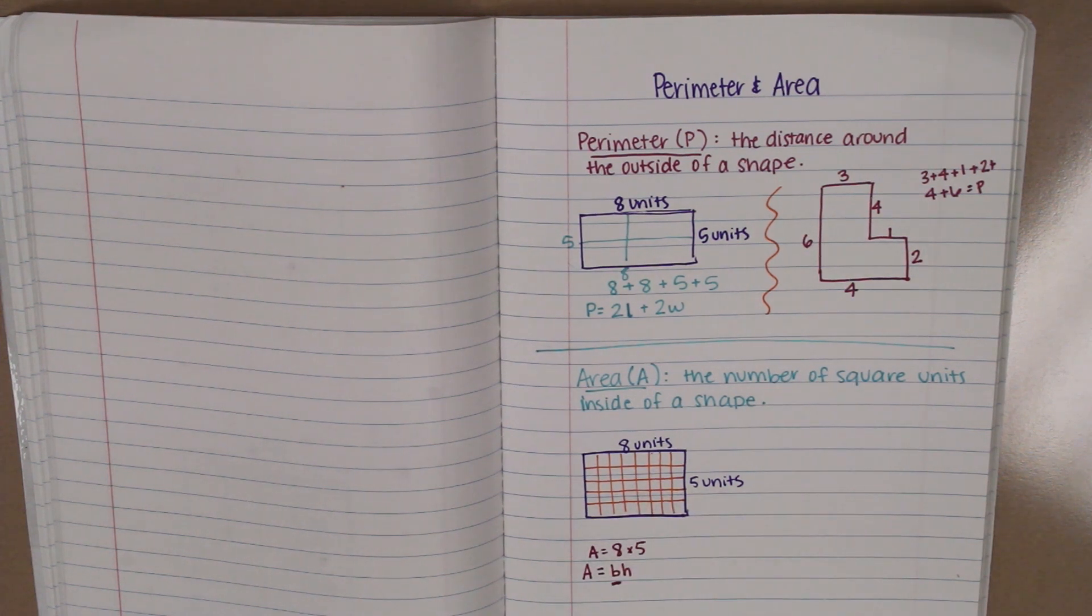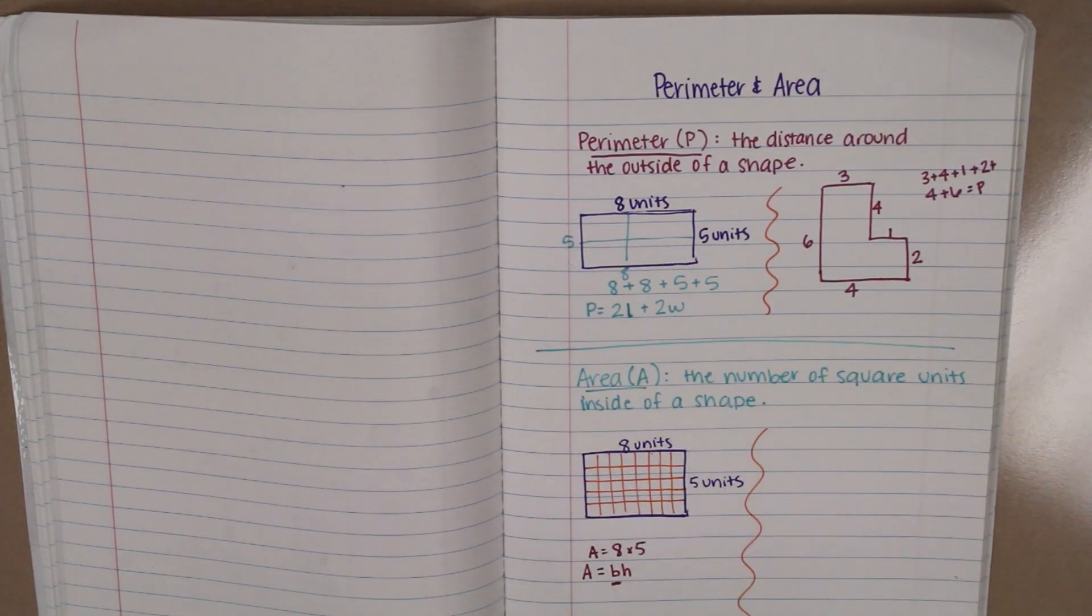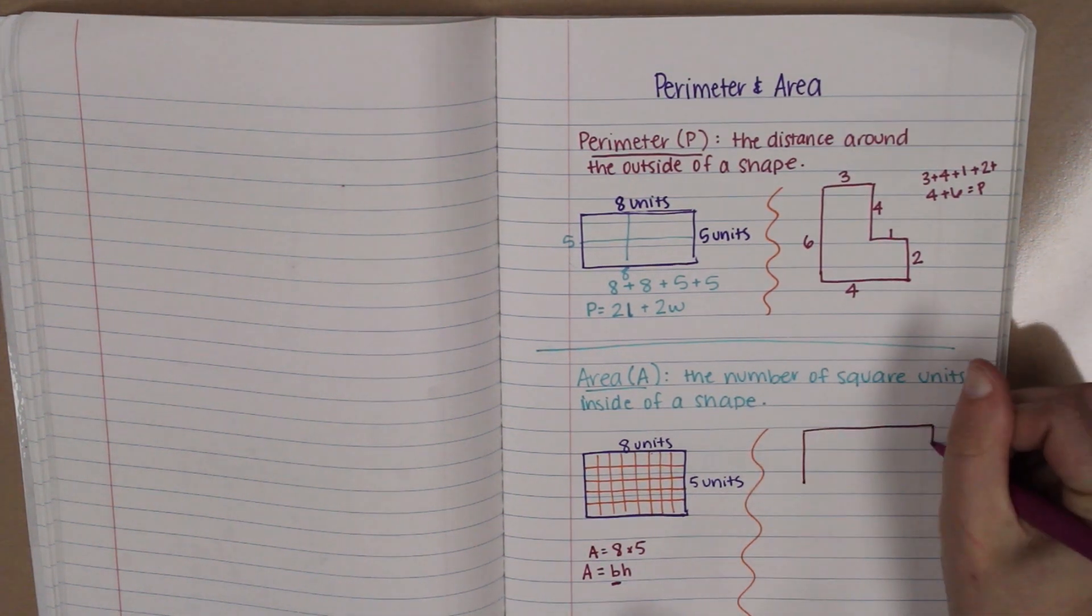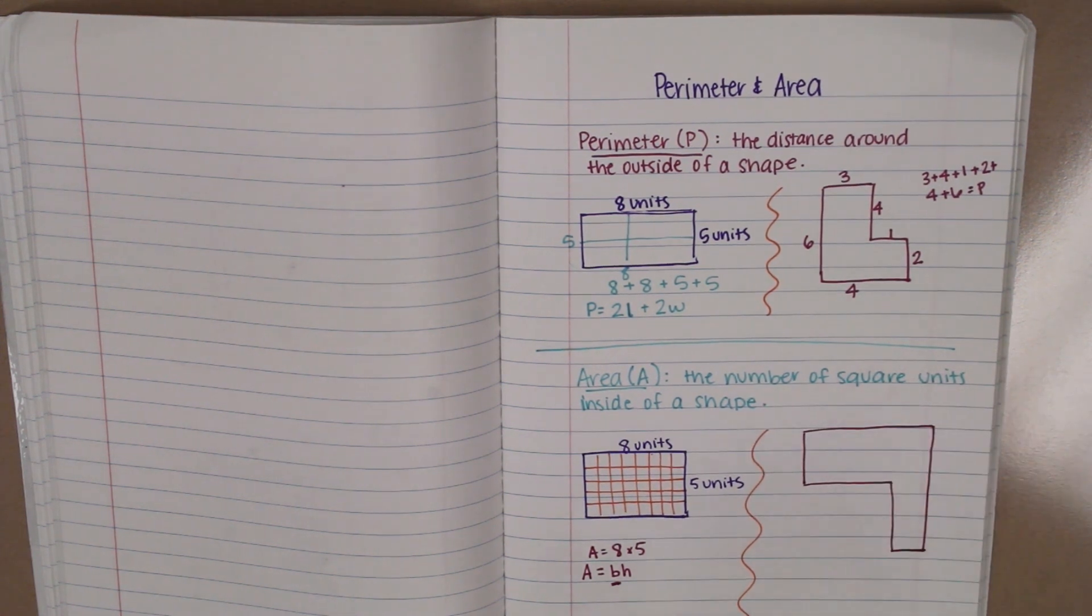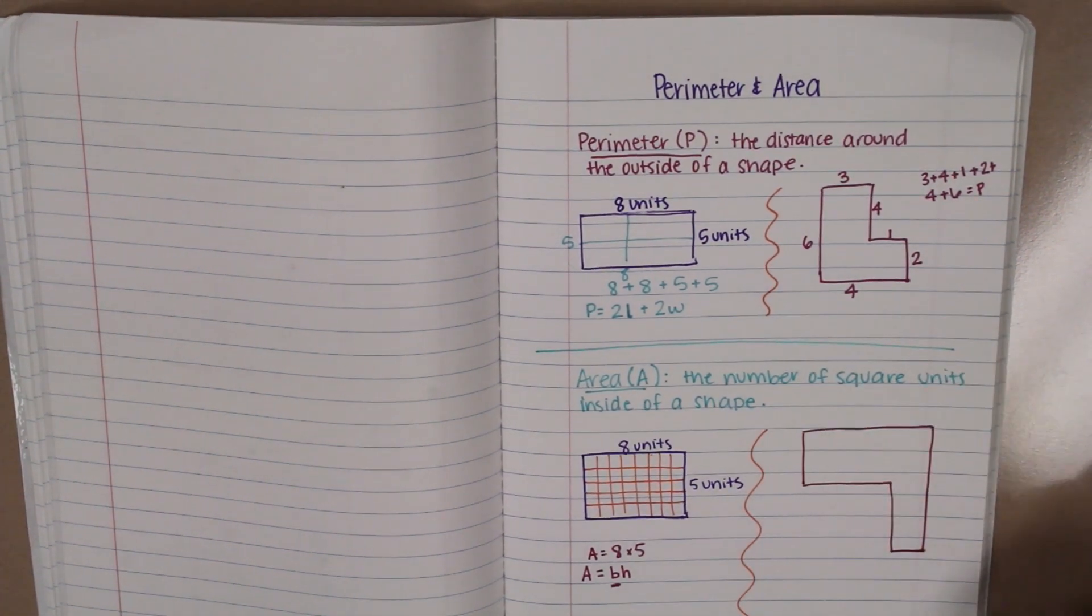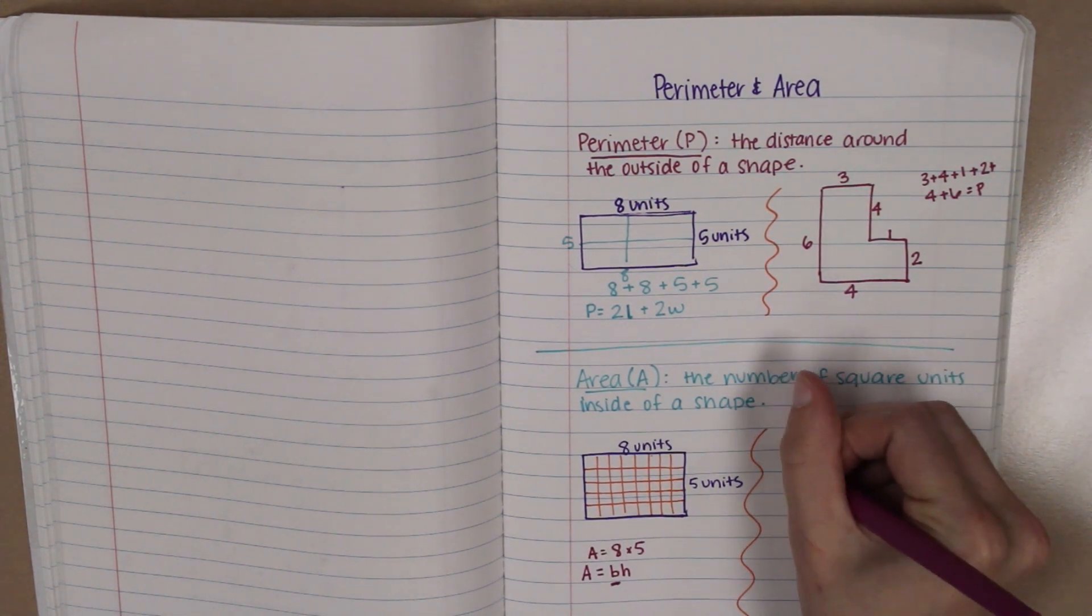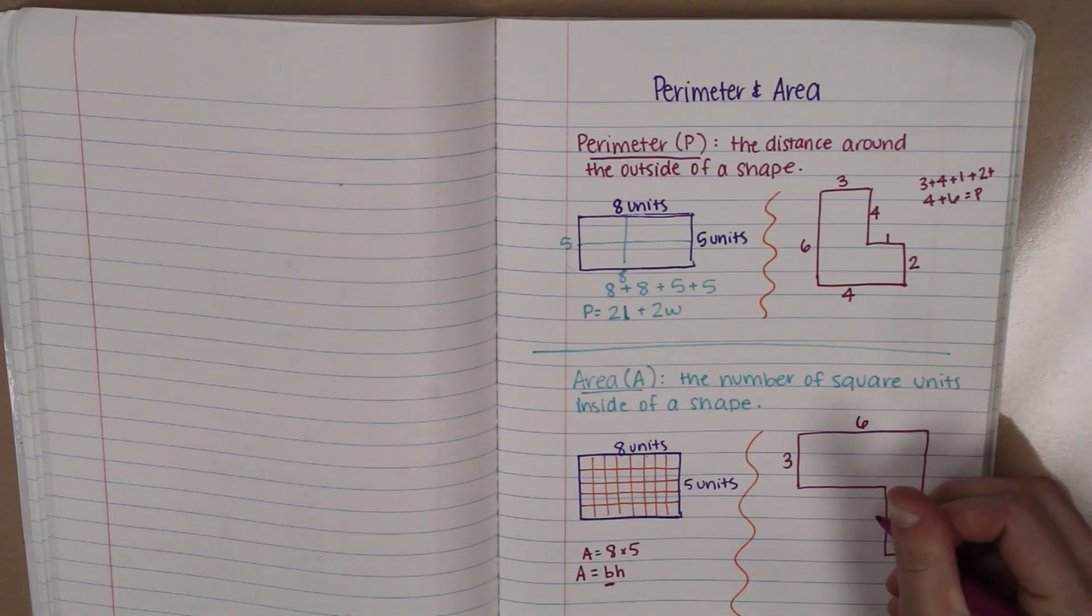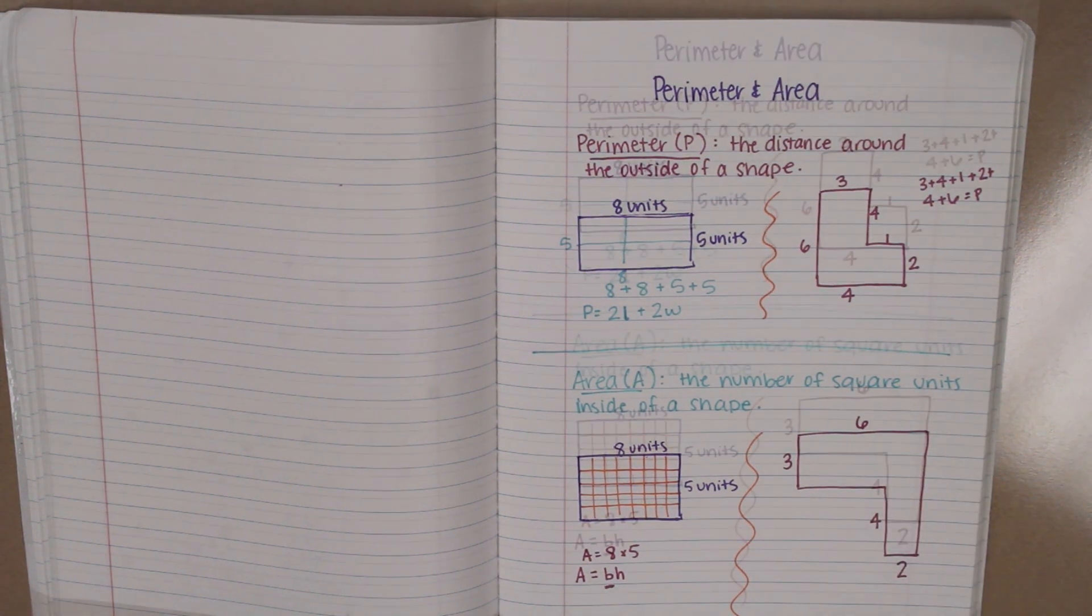All right, what about an irregular shape? That's where it gets a little bit weird. Let's kind of take an upside down L this time. All right, let's say we wanted to find the area of this one. If I had my side lengths labeled, let's say the side length was six. This one's three. This one is, hmm, how about four? And this one is two.